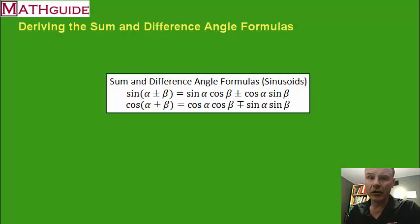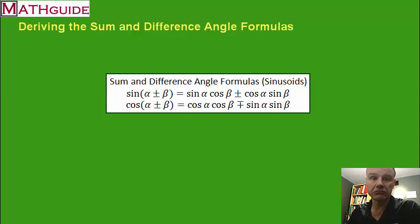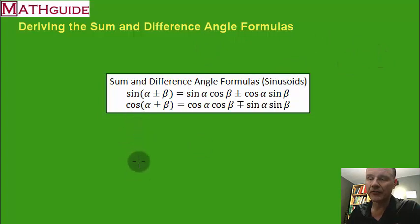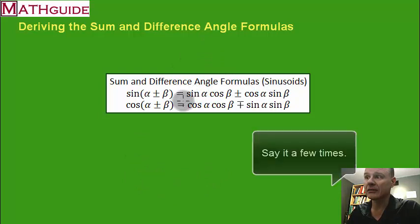These are the two formulas that we're going to be looking at, and I'm actually going to be proving them and showing you where they come from. You're going to have to memorize these if you're in a trig class. It's fairly easy to memorize because the sum and difference formula for sine, if you just read it, is sine cosine cosine sine. If you look at the relationship for cosine, it's cosine cosine sine sine. The best way to memorize this is to say that a few times: sine cosine cosine sine, cosine cosine sine sine.